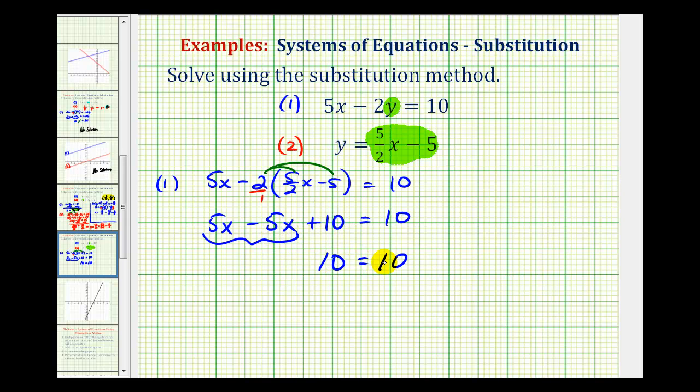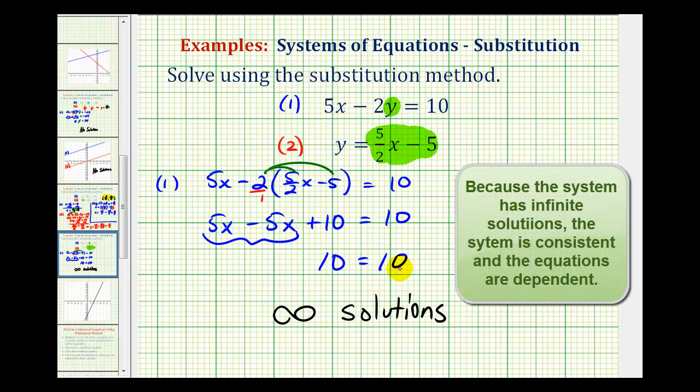And notice how there's no longer any variable terms. We're left with ten equals ten. When the variables simplify out, and we're left with a true statement, or a true equation, ten is always equal to ten. This tells us we have an infinite number of solutions. If the variables simplify out, and we're left with a false statement, or a false equation, we would have no solutions.